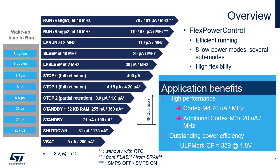Note that for RF operation, the system cannot go below standby with RAM retention mode, as a minimum set of contexts needs to be maintained. STM32WL5 devices also support a battery backup domain called VBAT. The high flexibility in power management provides Cortex-M4 consumption of 70 microamps per MHz and simultaneous Cortex-M0 Plus consumption of 28 microamps per MHz, together with outstanding power efficiency demonstrated by a ULP MarkCore profile score of 359 at 1.8 volts and 223 at 3 volts.